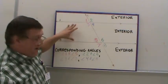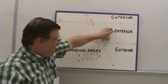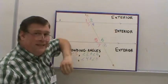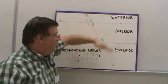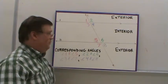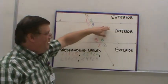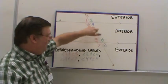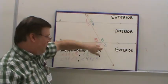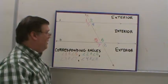When you've got a set of parallel lines, the inside of the parallel lines is called the interior, and outside of the parallel lines is called the exterior. Interior angles are all four of the angles inside the interior; exterior angles are the four that are outside of the parallel lines.